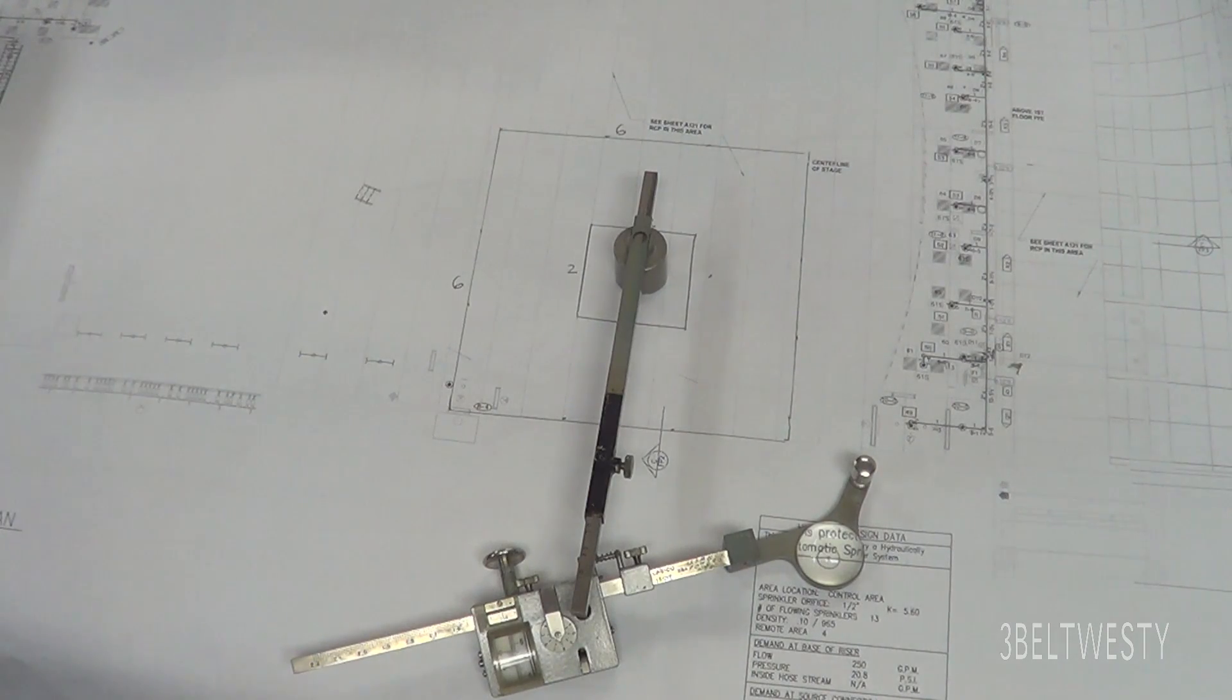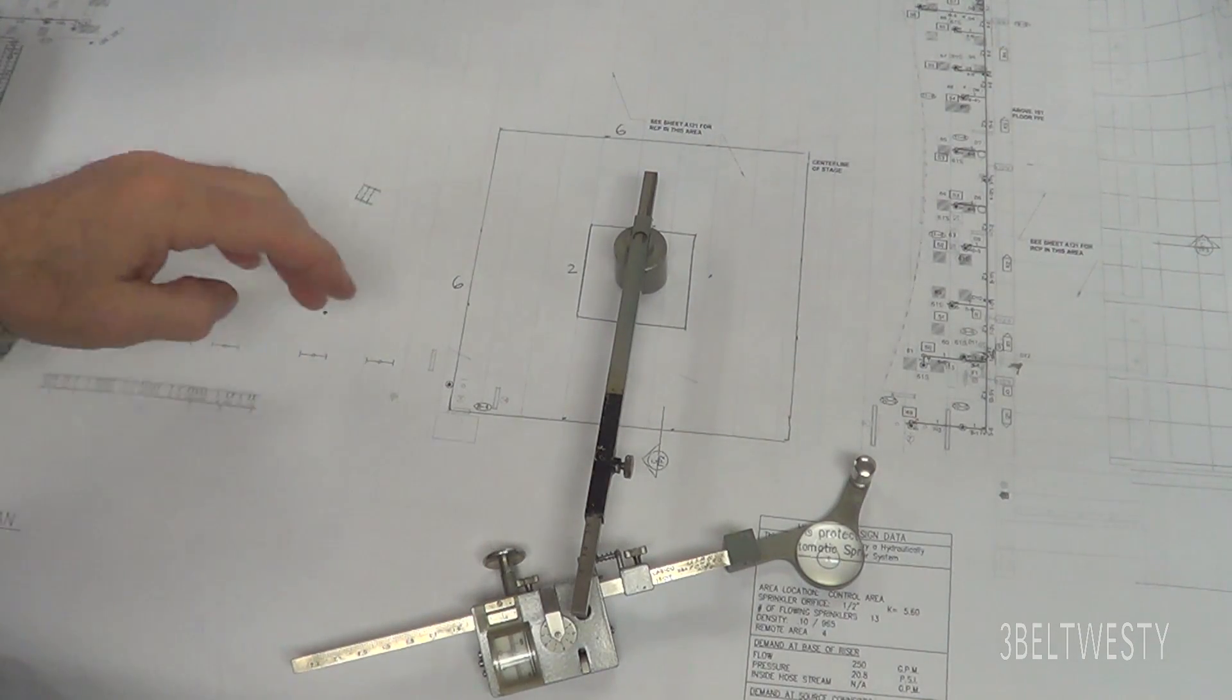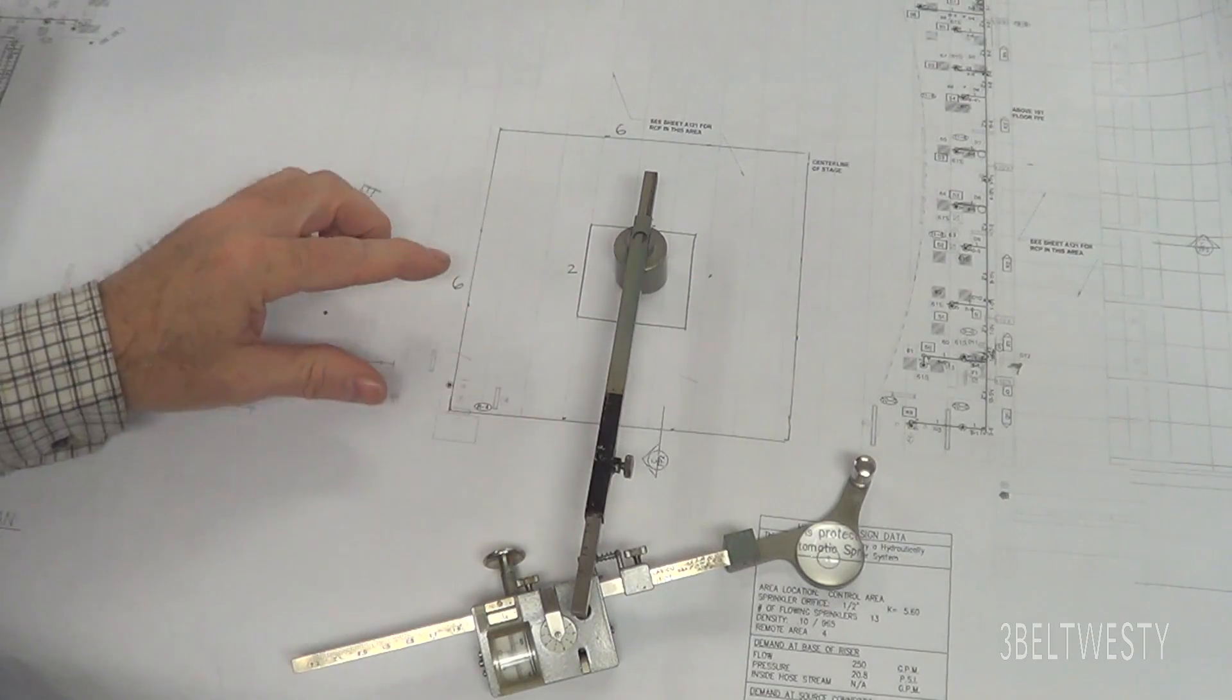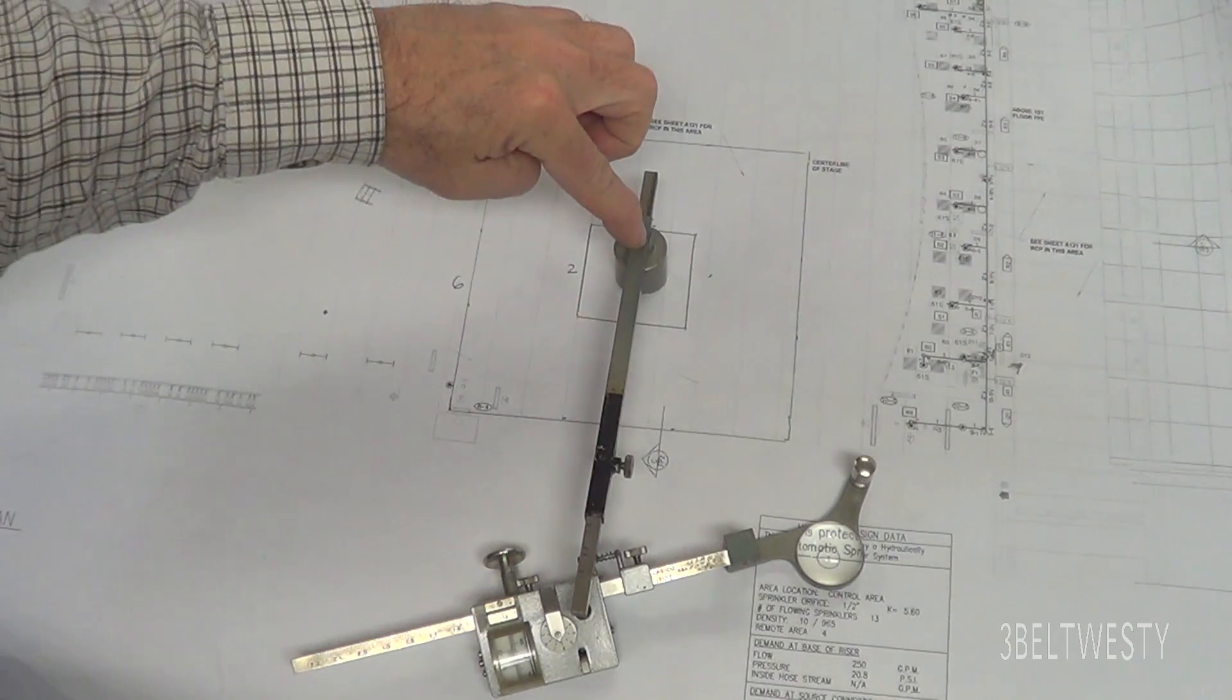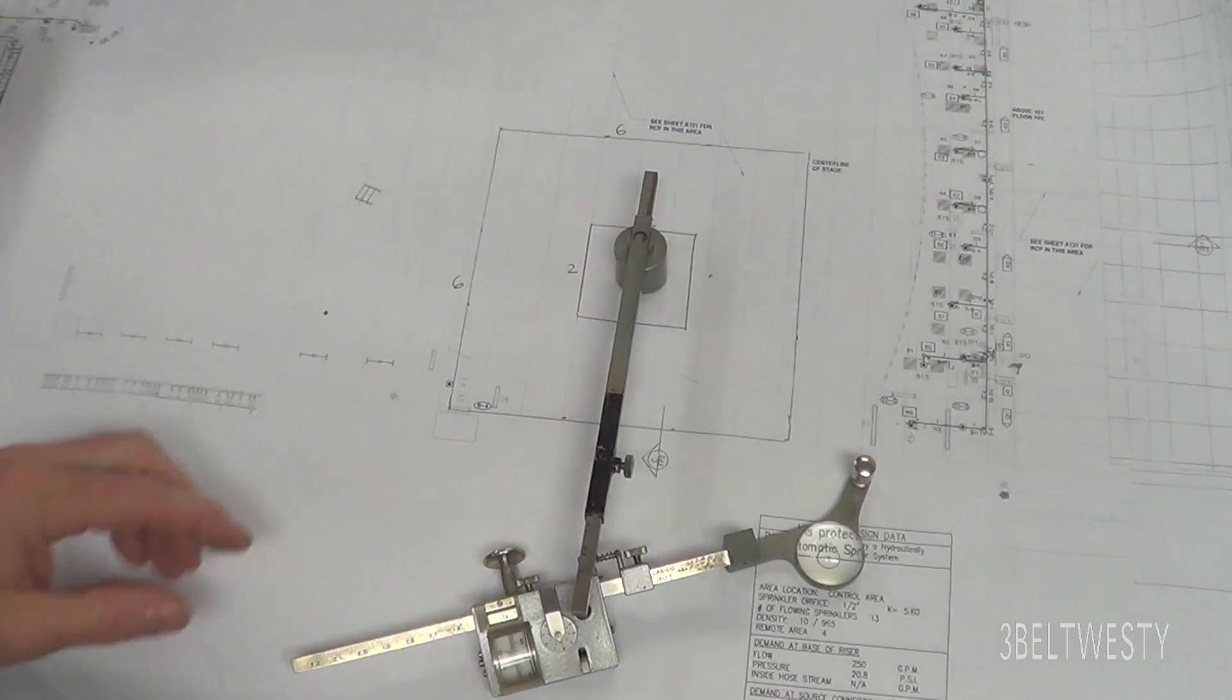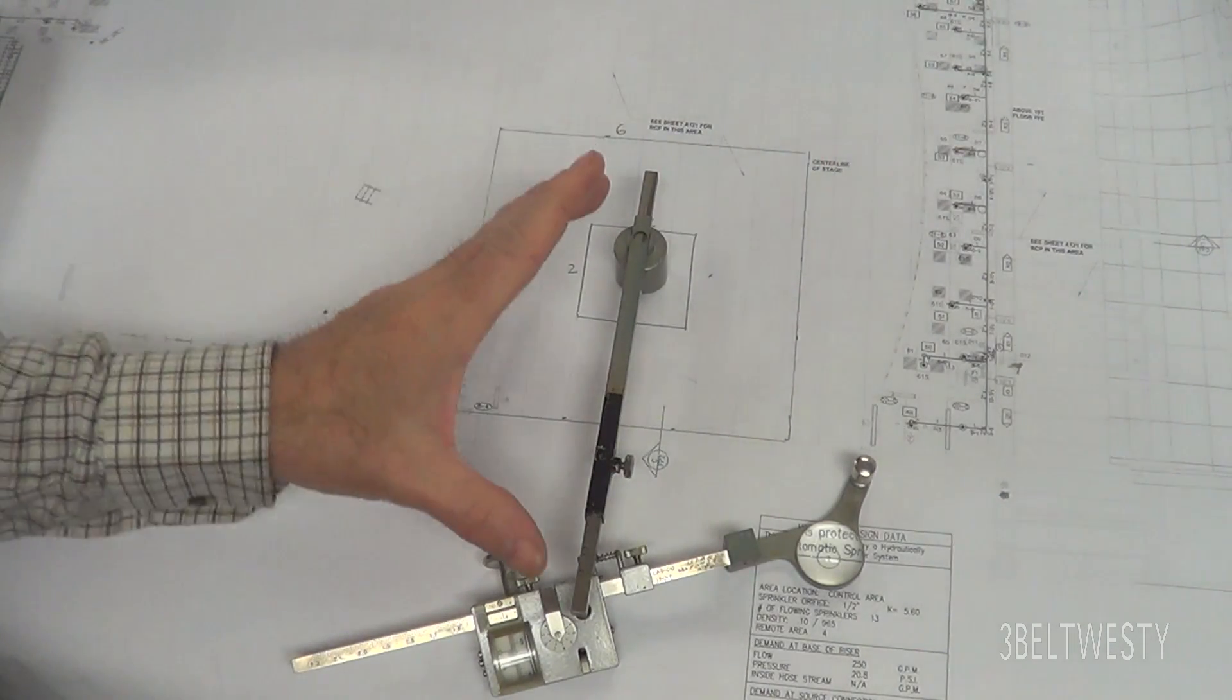I'm going to show a planimeter here that has an adjustable tracer arm and pole arm. In this configuration, I have the pole arm inside the figure that I want to measure, and what that does is the length of this arm does matter.